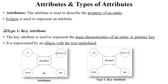Attributes are divided into four types. The first is key attribute. The key attribute is used to represent the primary key or main characteristic of the entity. For example, every student has a unique ID or unique roll number — this is your primary key and is called the key attribute. Key attributes are represented by an ellipse with an underline on the text. Key attribute means primary key.